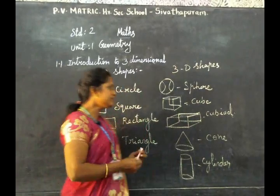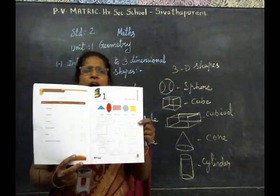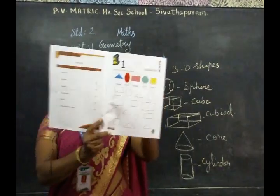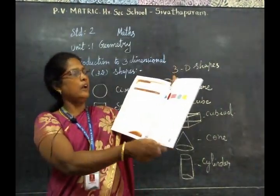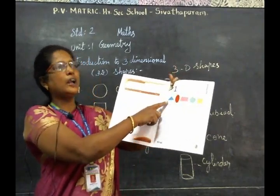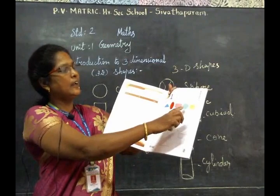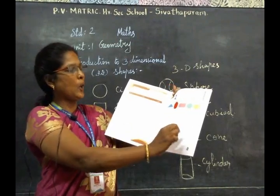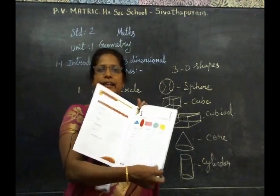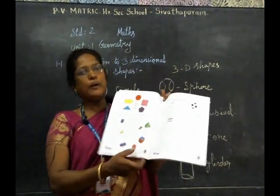Okay, those are the 3D shapes. Now take your activity book, page number one. Identify and color the shapes: triangle — blue color, ellipse — red, rectangle — pink color, circle — green color, square — yellow color. Now you do the same coloring activity.